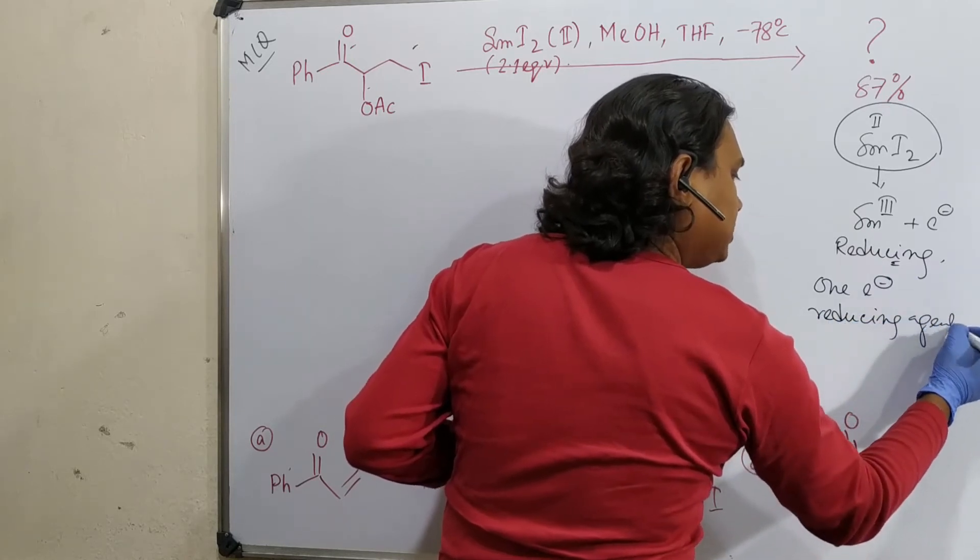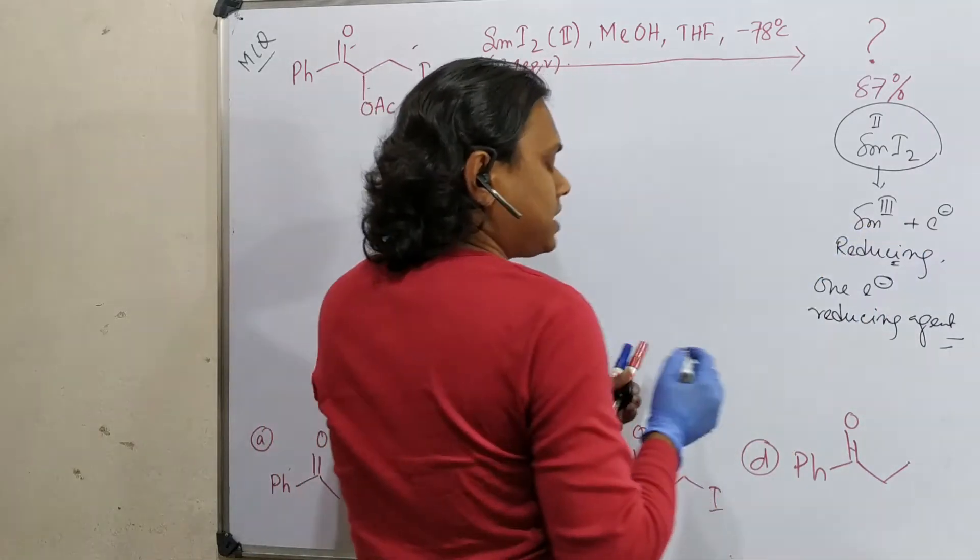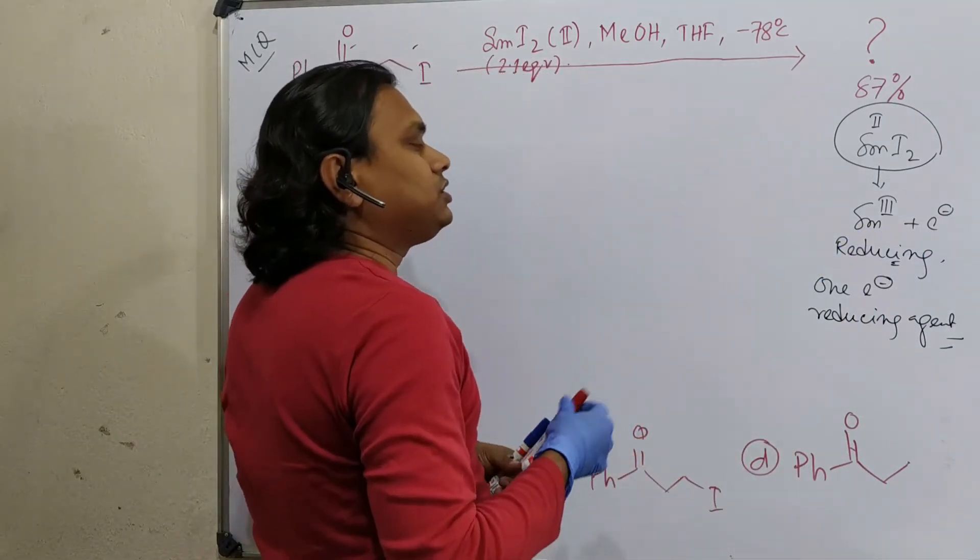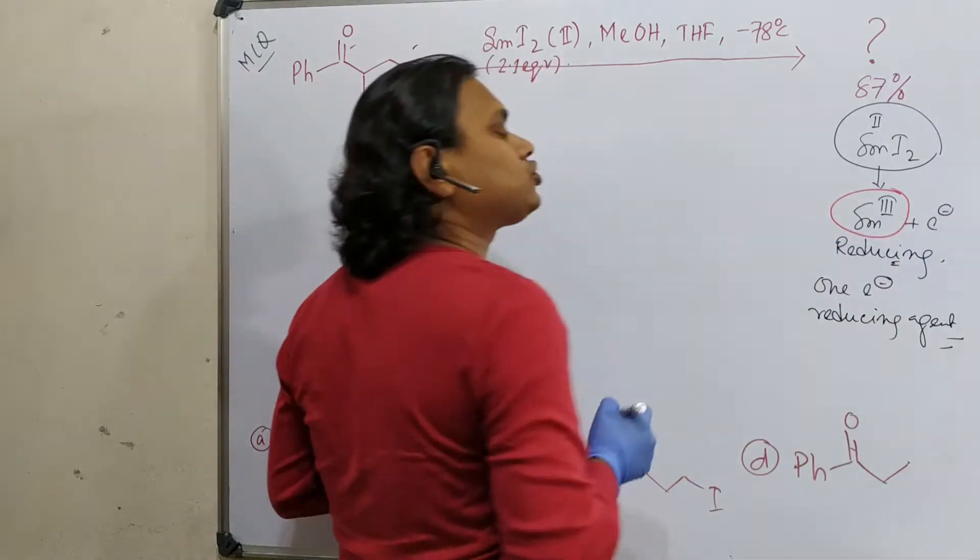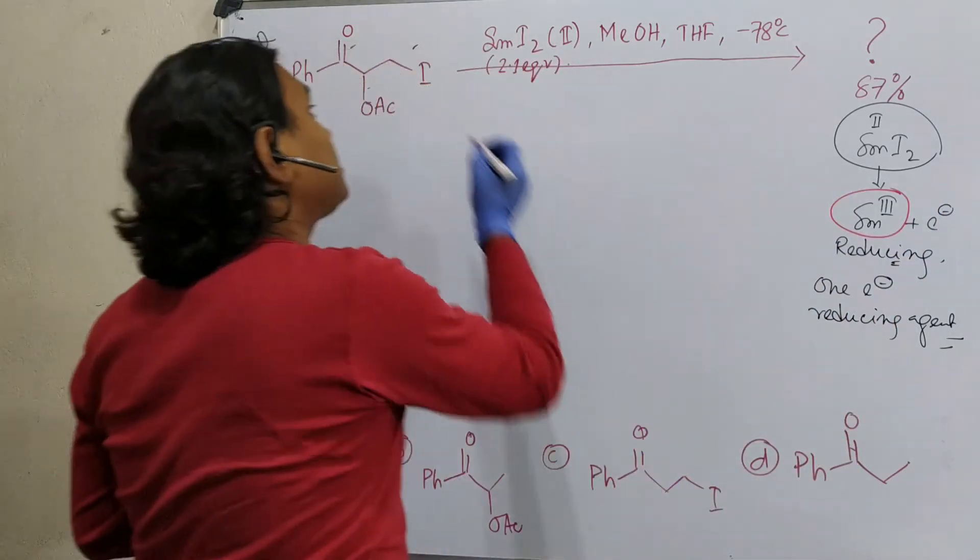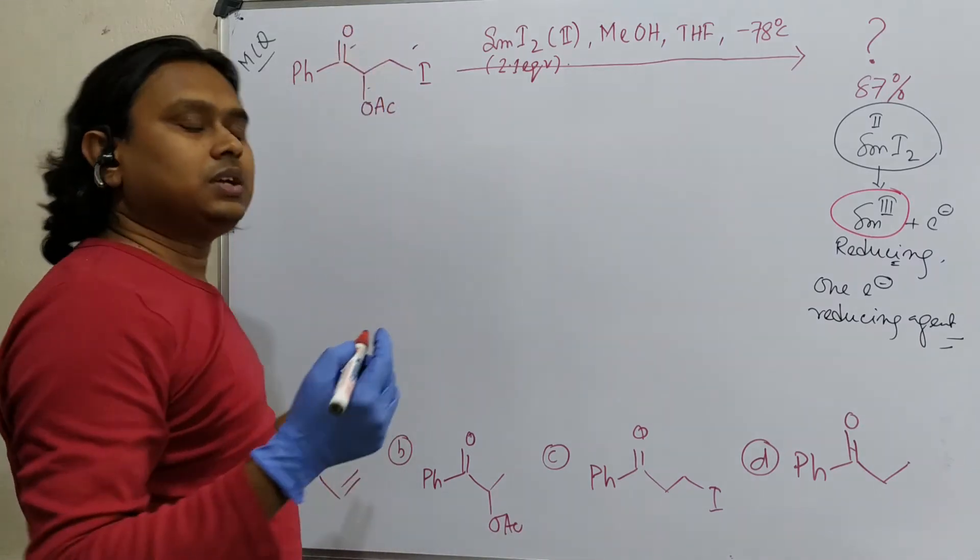And along with that, it is a very strong Lewis acid also, the produced samarium three plus. Because we know that due to lanthanide contraction, these lanthanide elements are very strong Lewis acid. And when it coordinates to this, it stabilizes.